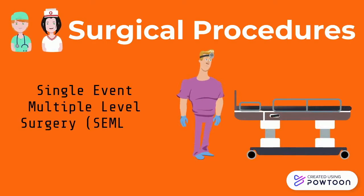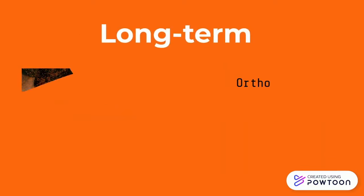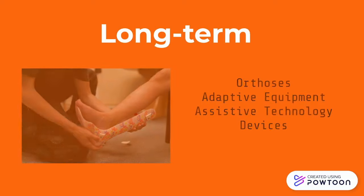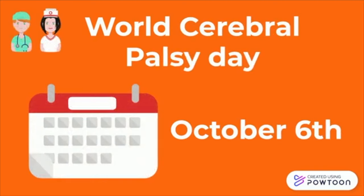For surgical procedures, a common practice consideration is to fix multiple issues in one surgery to avoid multiple exposures to anesthesia risk and other operative risks. This approach also allows for a planned course of post-operative rehabilitation. In the long-term management of children with CP, it is important to determine how much assistance is required on a daily basis for optimal functioning. Orthoses, adaptive equipment, and assistive technology devices are used to improve a child's functional abilities and facilitate activities of daily living. An assistive technology device refers to any item, piece of equipment, or product system — whether acquired commercially off-the-shelf, modified, or customized — that is used to increase, maintain, or improve functional capabilities of a child with a disability.